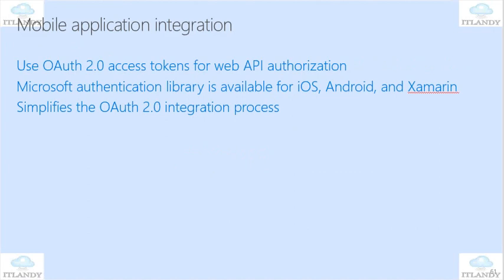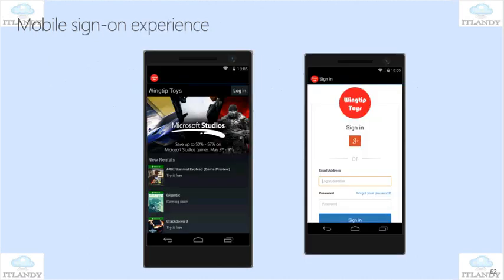Mobile application: use OAuth2 to access tokens for a web API. The Microsoft Authentication Library is available for iOS and Android, and it simplifies the OAuth2 integration — it's like a native client for iOS and Android.